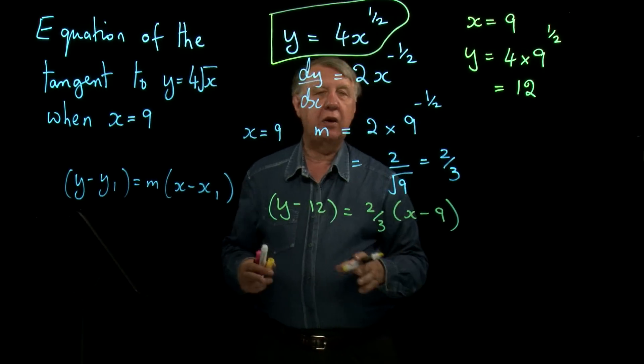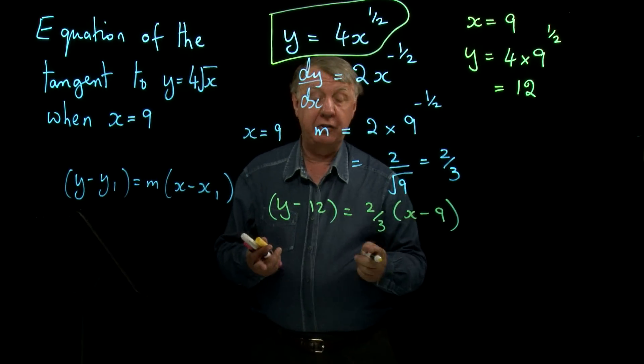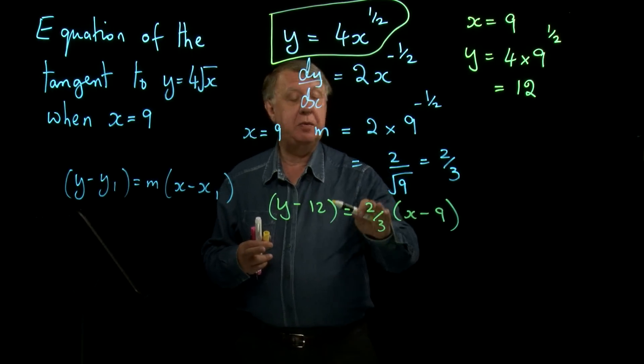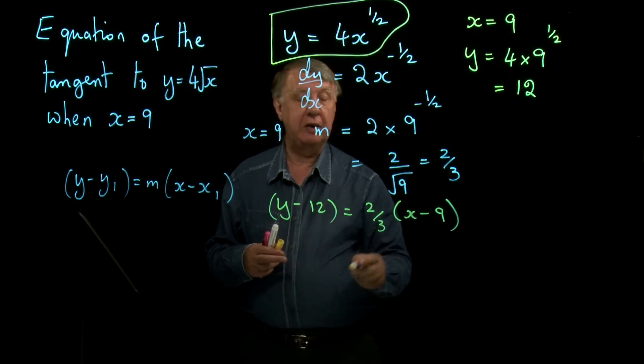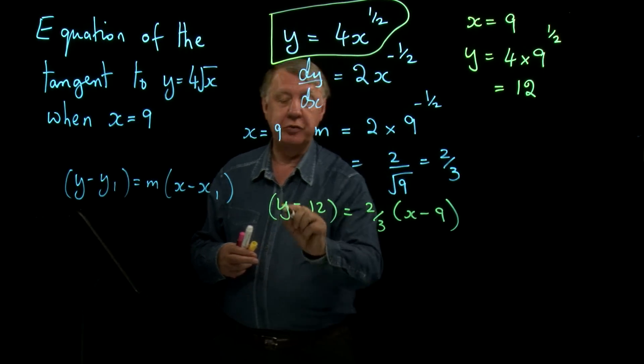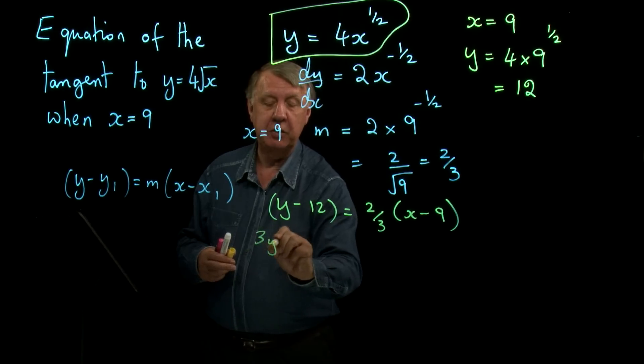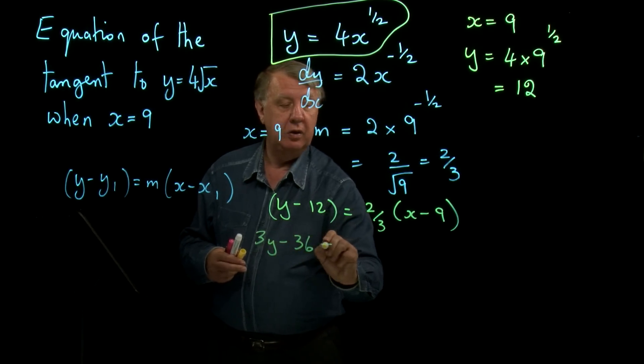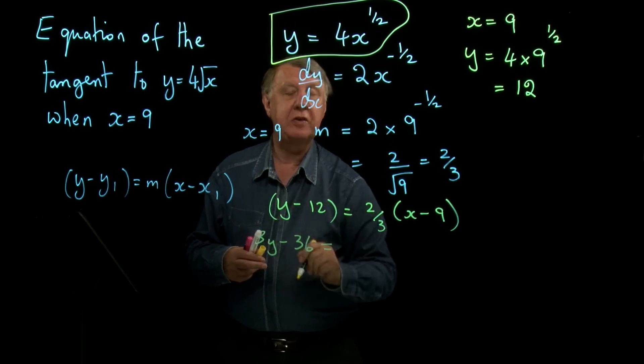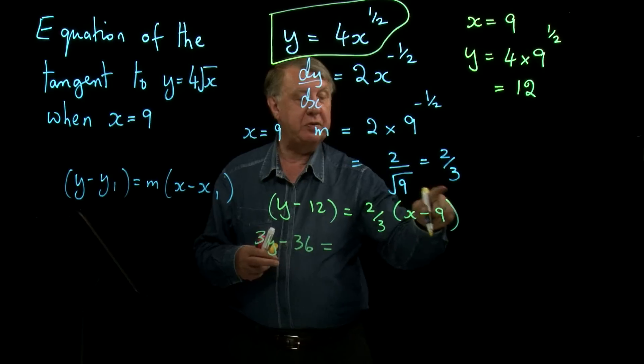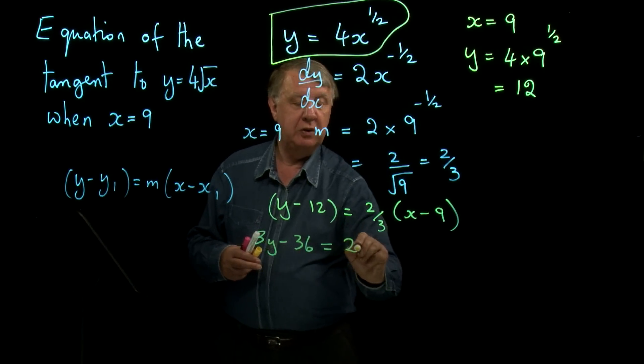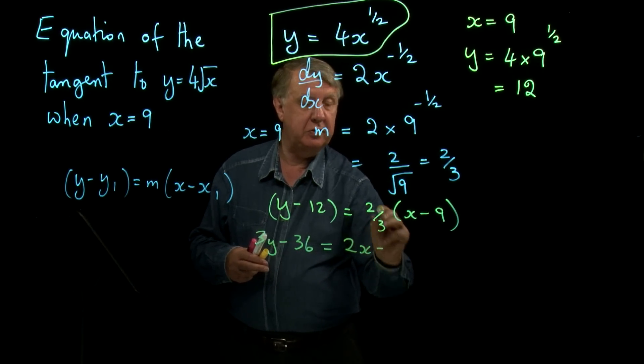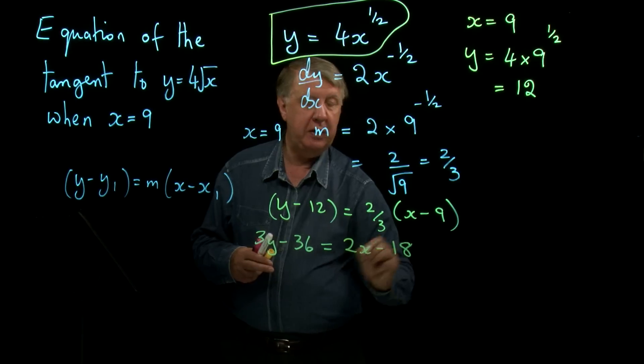Don't forget the golden rules: we don't like fractions in formulae. The simplest way of removing the fraction here is to take the three and multiply this side, so 3y minus 36 equals—remember the 2 is still there—and I have to expand the bracket with the 2, so that's 2x minus 2 times 9 is 18.